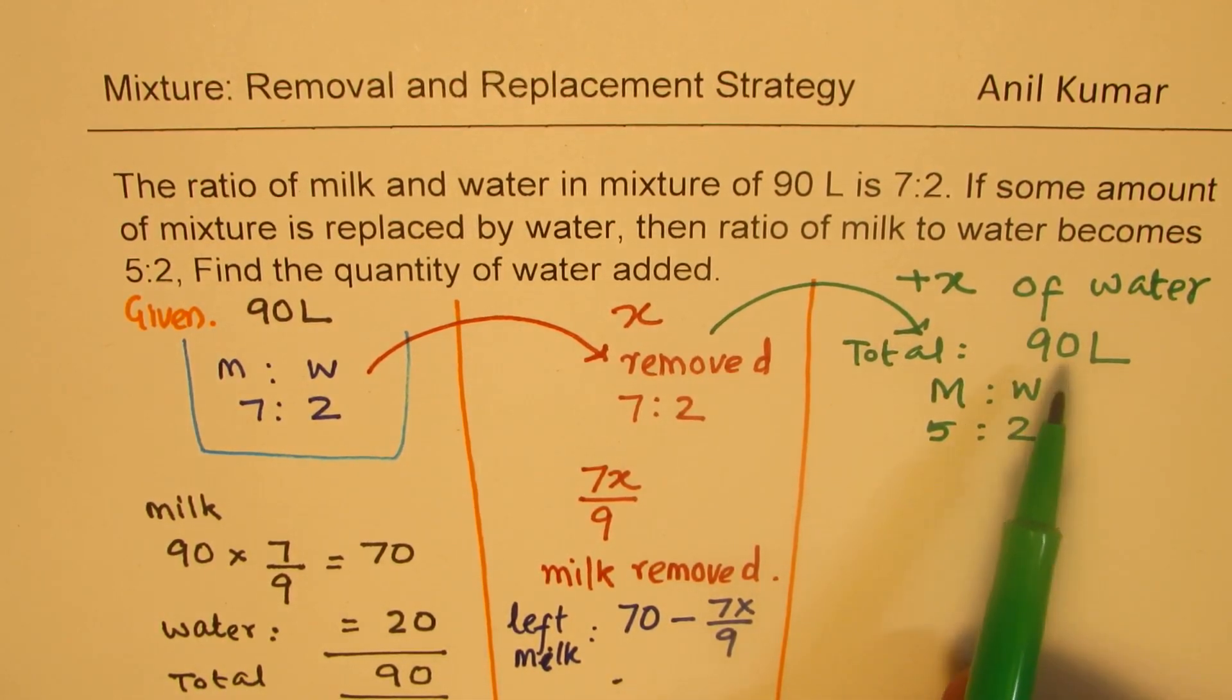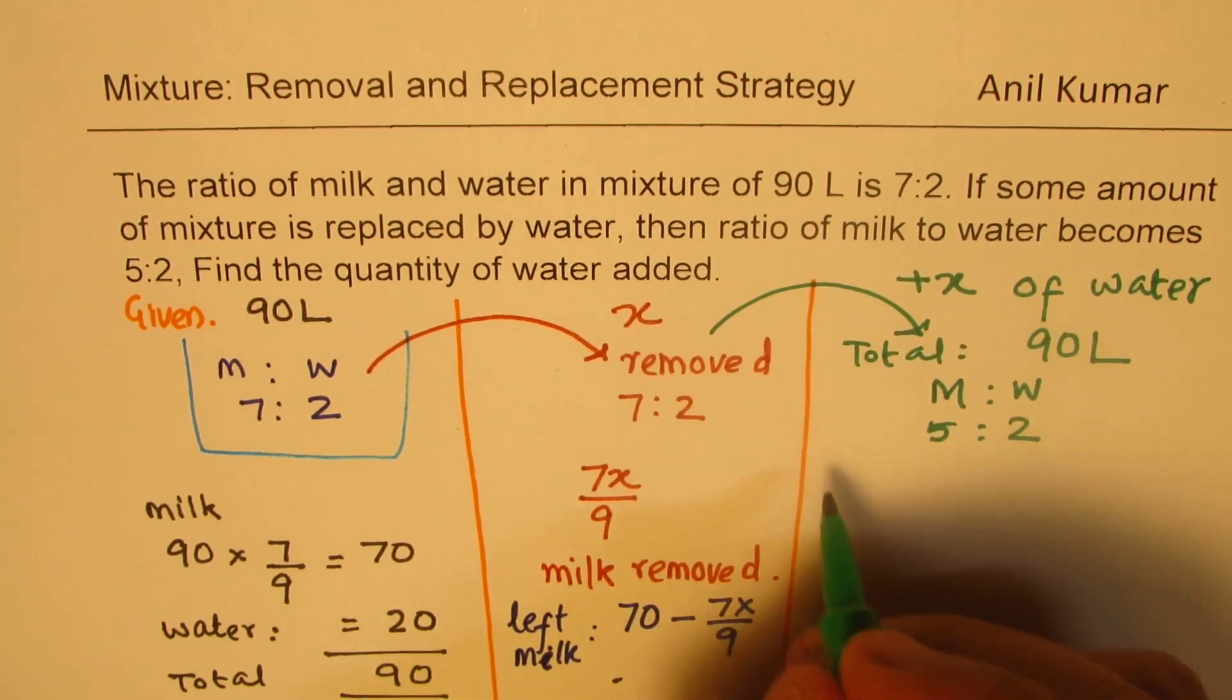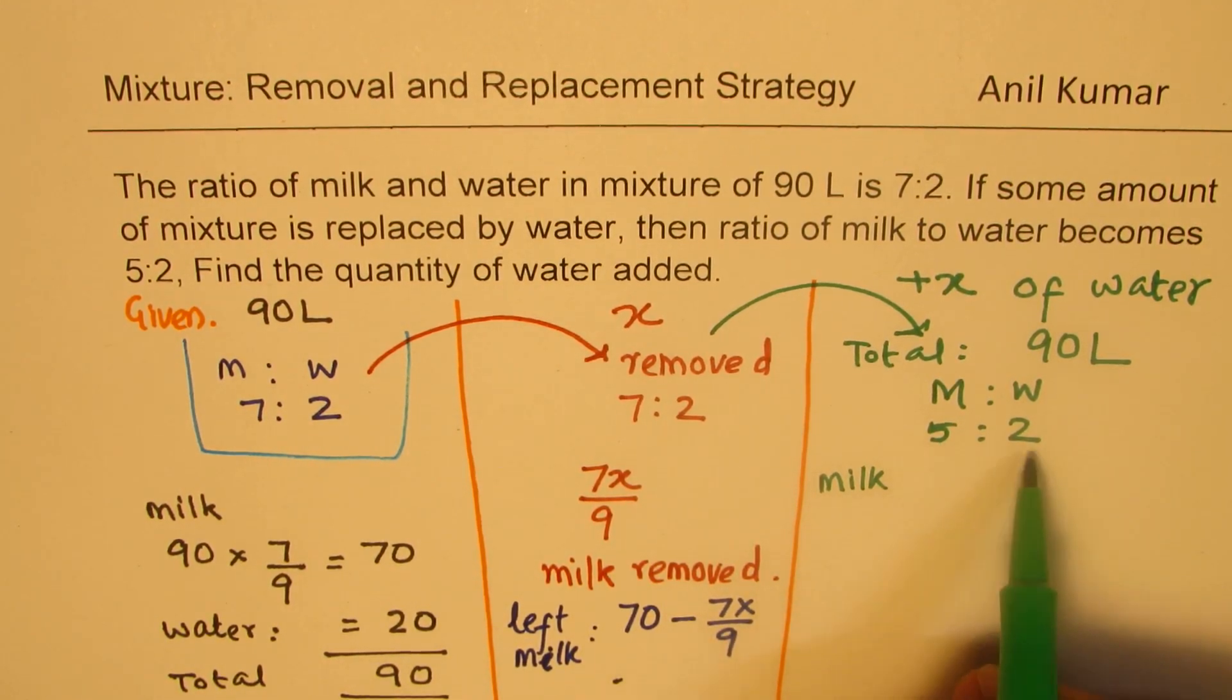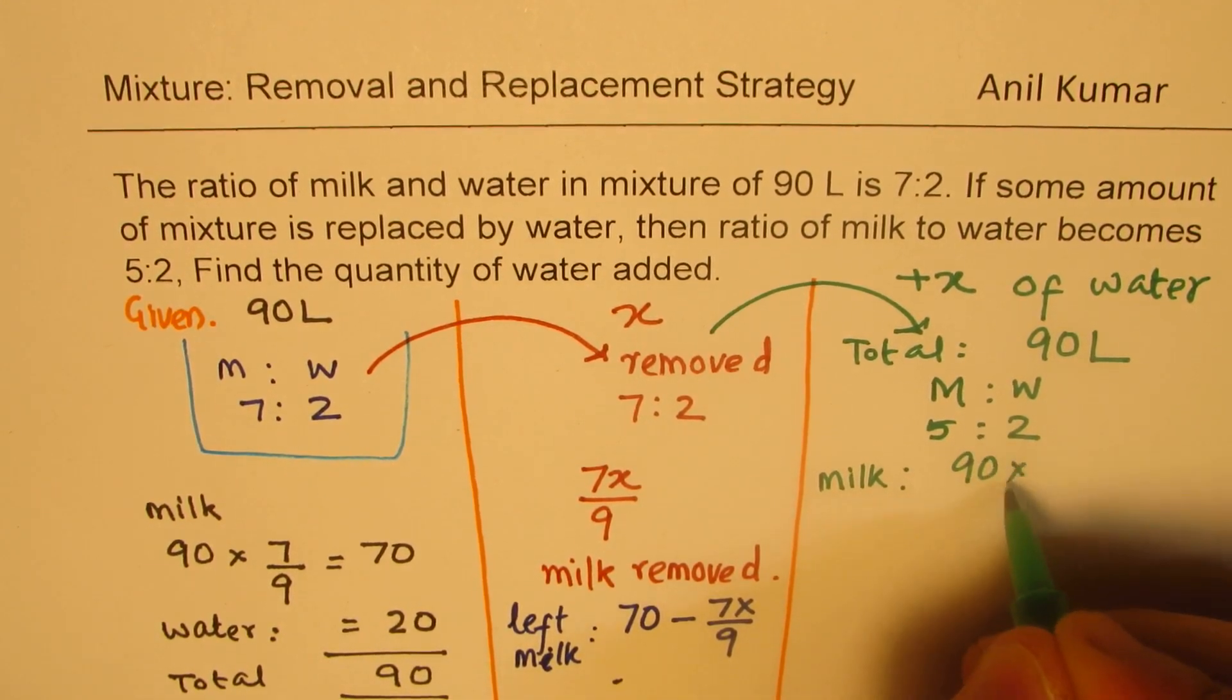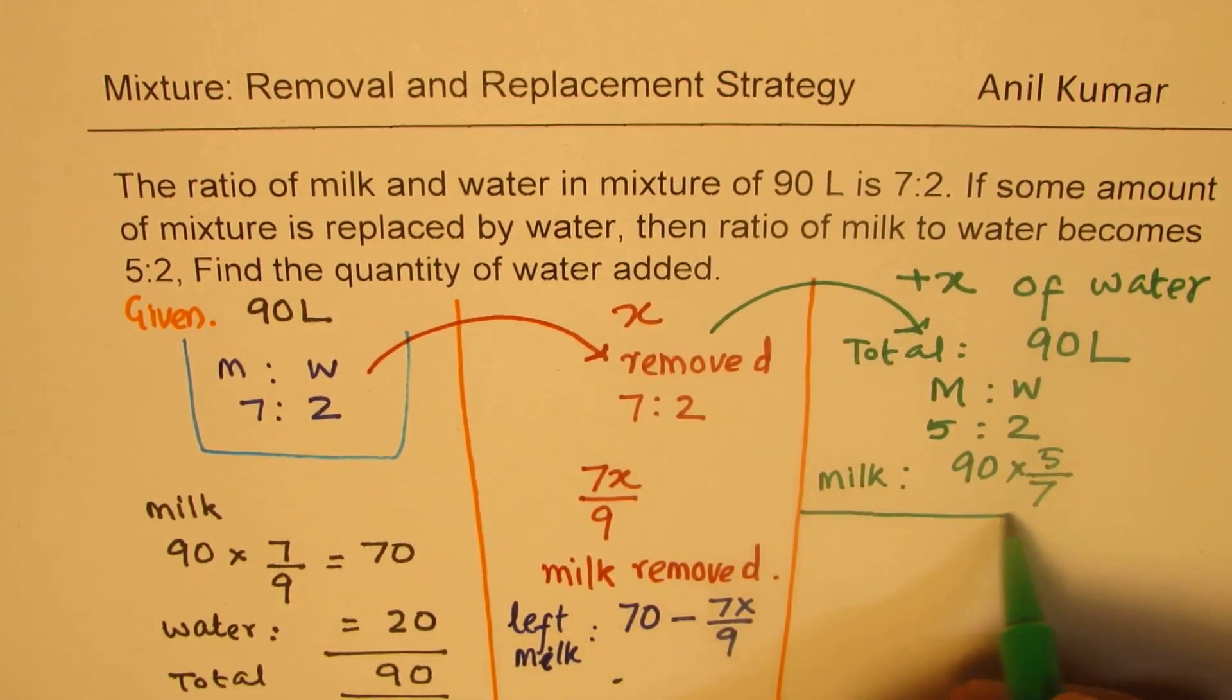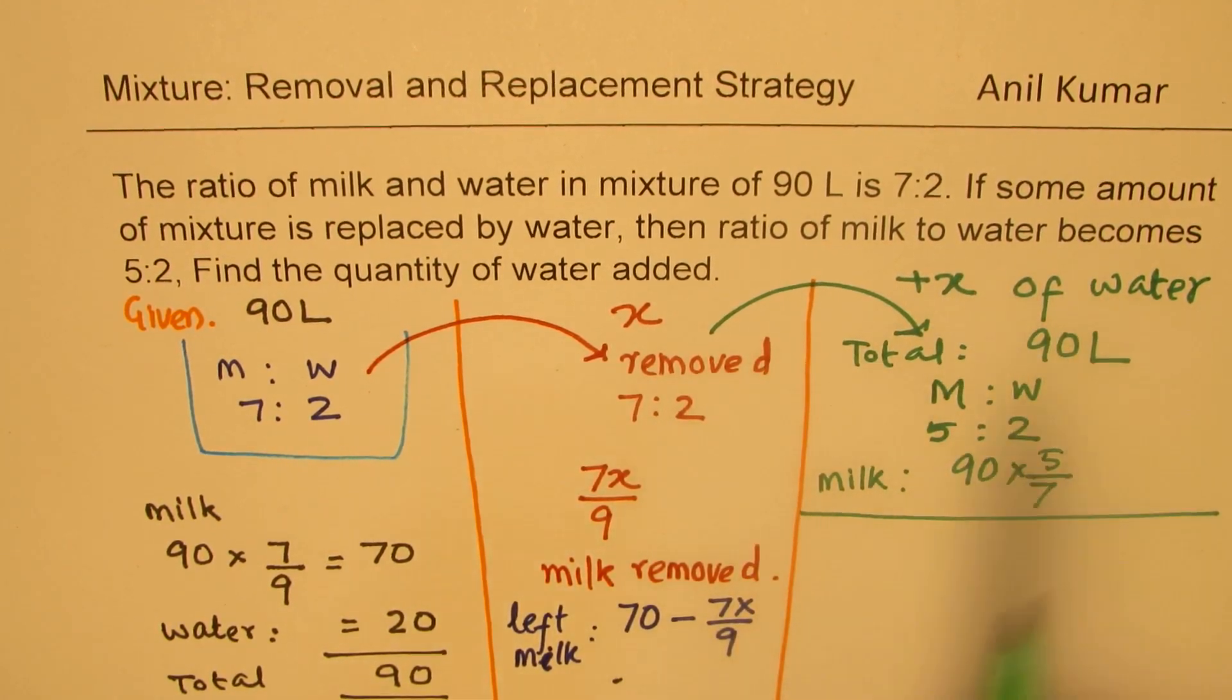So now in this 90 litres, what is the milk left? Well, in this case, the milk is 5 out of 7 of 90. So we can write this as milk is 90 times 5 out of 7. So that is the quantity of milk which will be there once you add x litres of water.